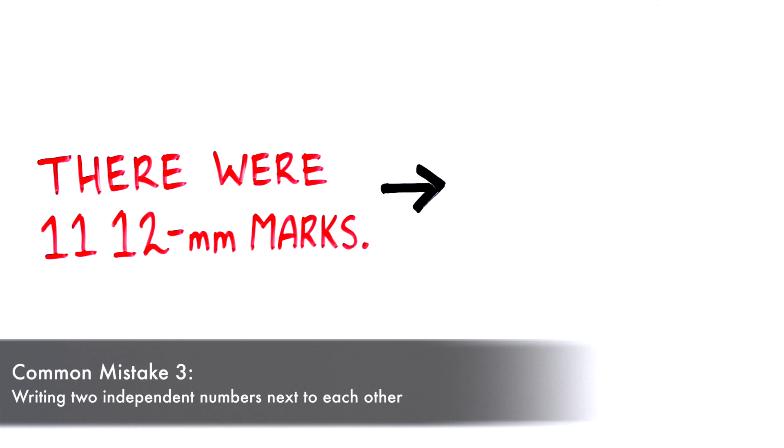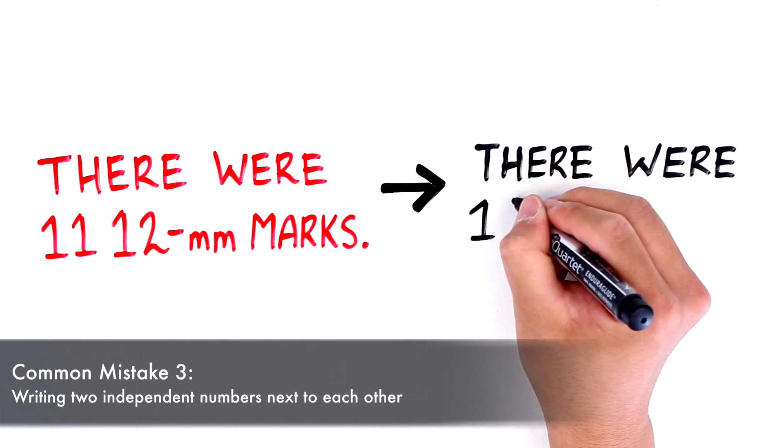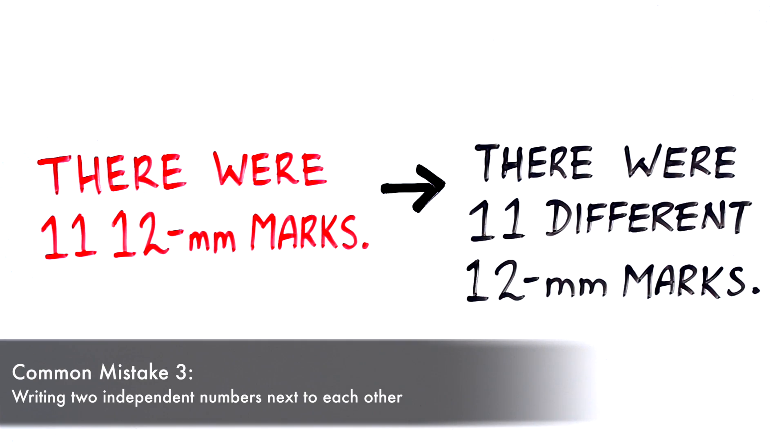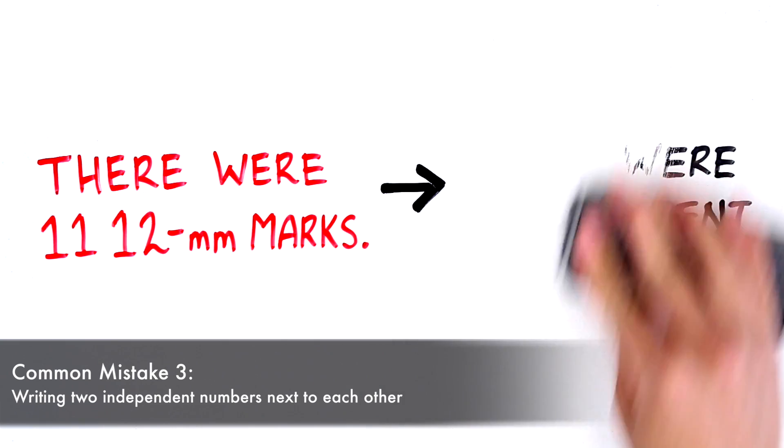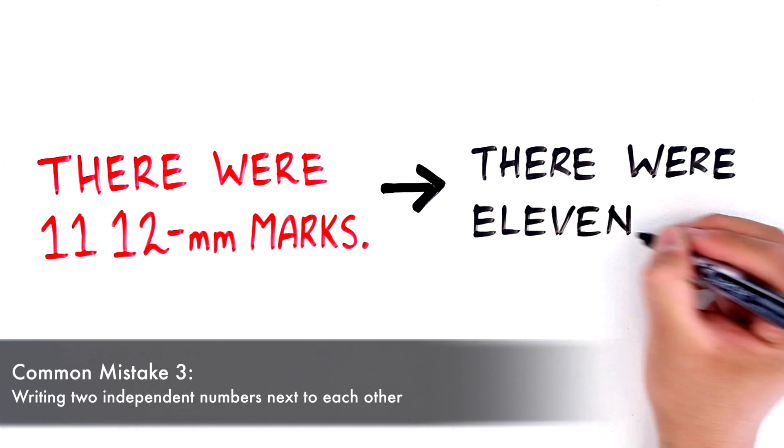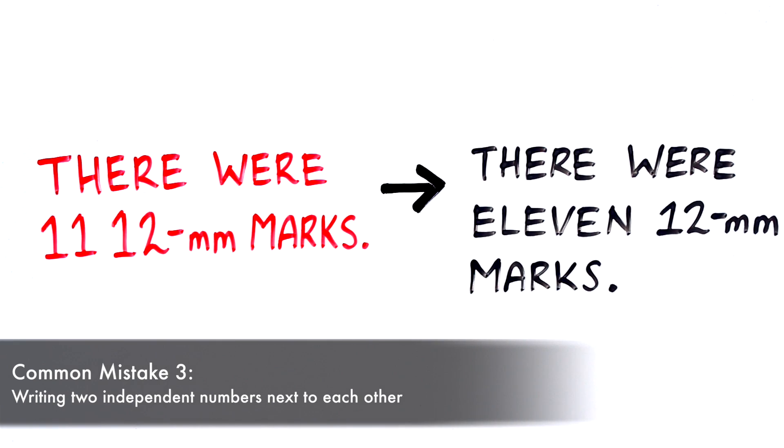There are two ways she can remove the ambiguity here. The first is to rearrange the sentence, so that the two independent numbers are no longer placed next to one another. And the second is to write one of the numbers using words rather than numerals.